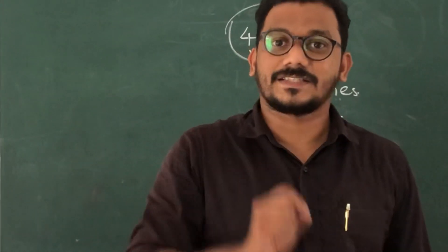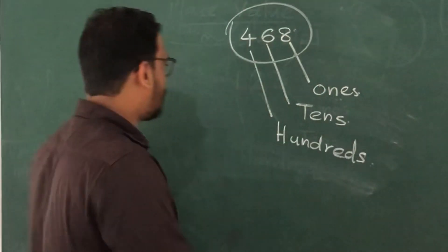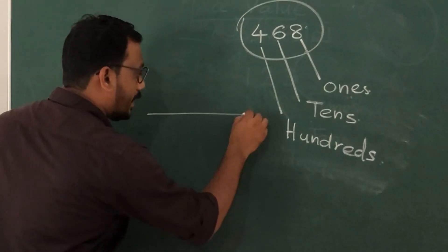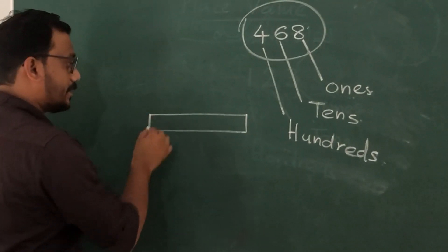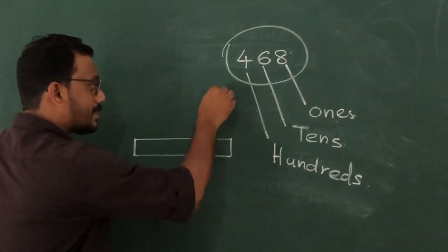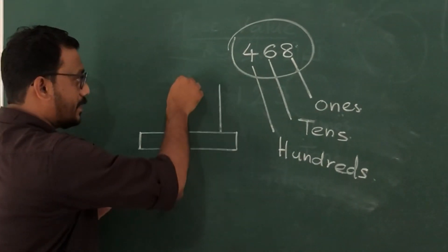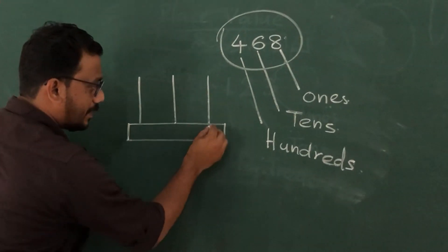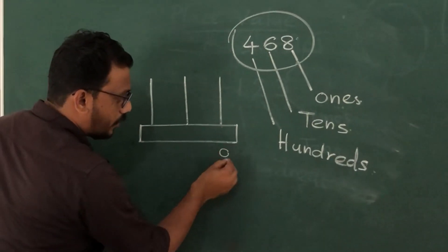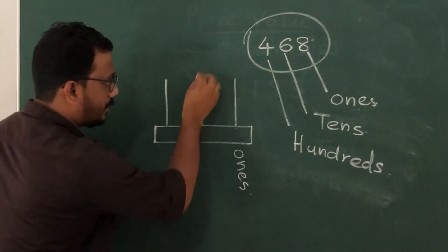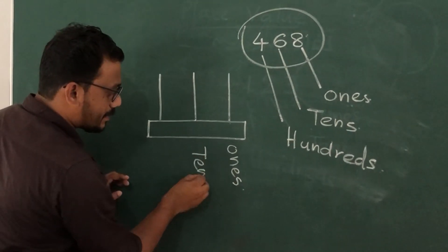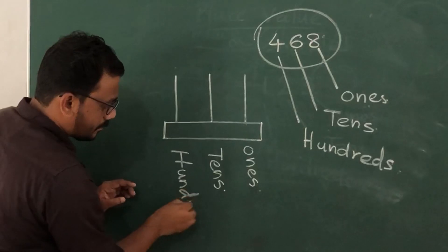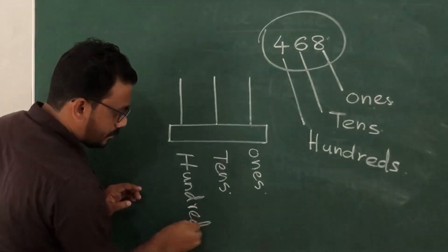Let us arrange this number in an abacus. I am going to draw an abacus here. This is a model of an abacus — ones, tens, hundreds. Here: ones, tens, hundreds.